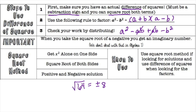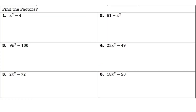Difference of squares gives you factored form, while the square root method gives you the solution — like plus or minus 8. For our first example, check to see if you can take the square root of both terms. Since 4 is a perfect square and x squared is a perfect square, and there's a subtraction sign, we can use the difference of squares method.